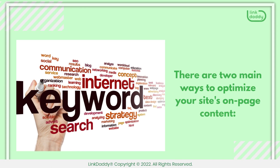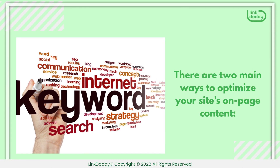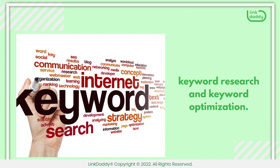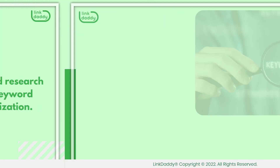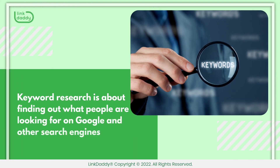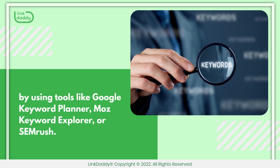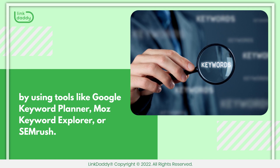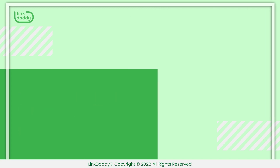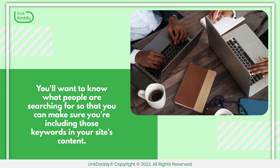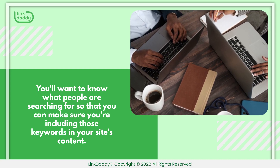There are two main ways to optimize your site's on-page content: keyword research and keyword optimization. Keyword research is about finding out what people are looking for on Google and other search engines by using tools like Google Keyword Planner, Moz Keyword Explorer, or SEMrush. You'll want to know what people are searching for so that you can make sure you're including those keywords in your site's content.